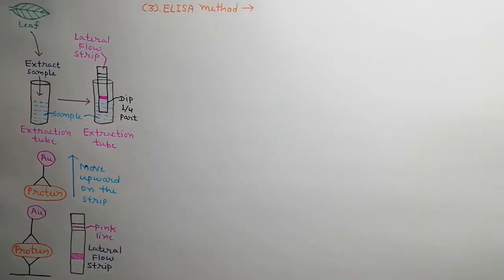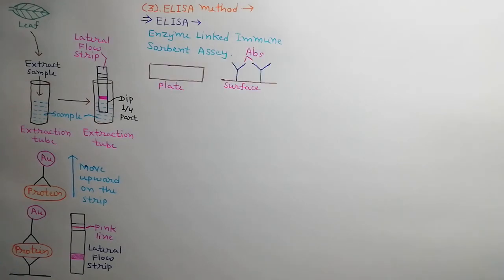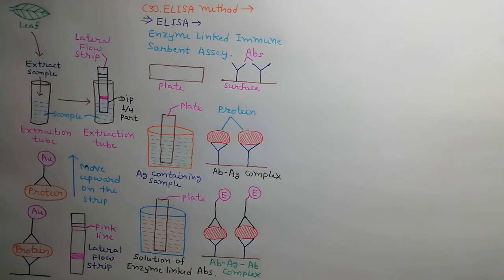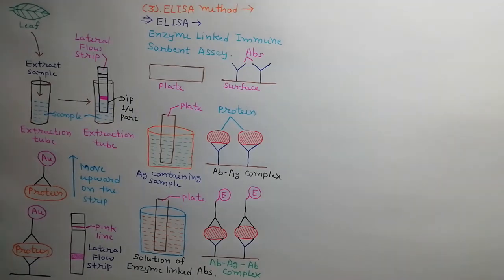Third method we will discuss is ELISA method. ELISA means enzyme-linked immunosorbent assay. In this method, we make a coat of antibodies on a plate as shown in the diagram. If the desired protein antigen is present in the sample, it will bind to antibodies and make antibody-antigen complex as shown in the diagram. If desired protein antigen has already bound with antibody, then enzyme-linked antibody will also bind this protein antigen and make antibody-antigen-antibody complex as shown in the diagram.